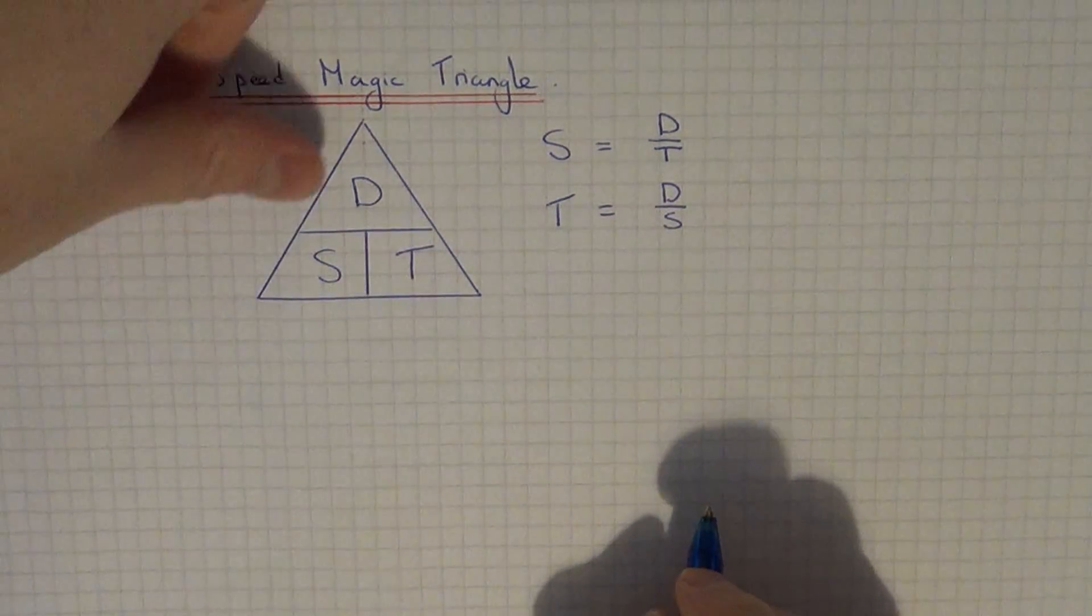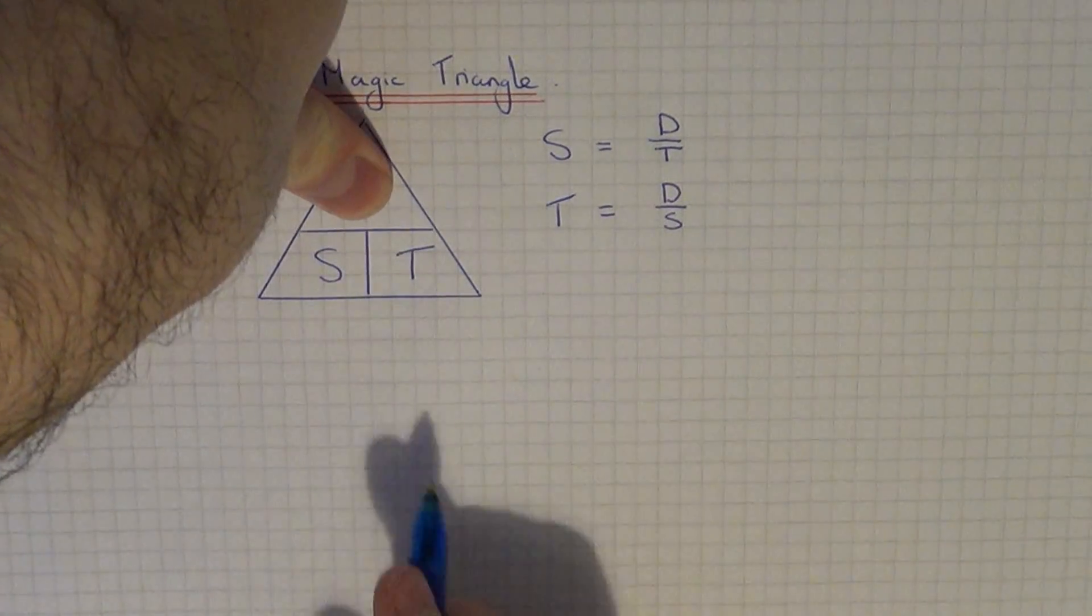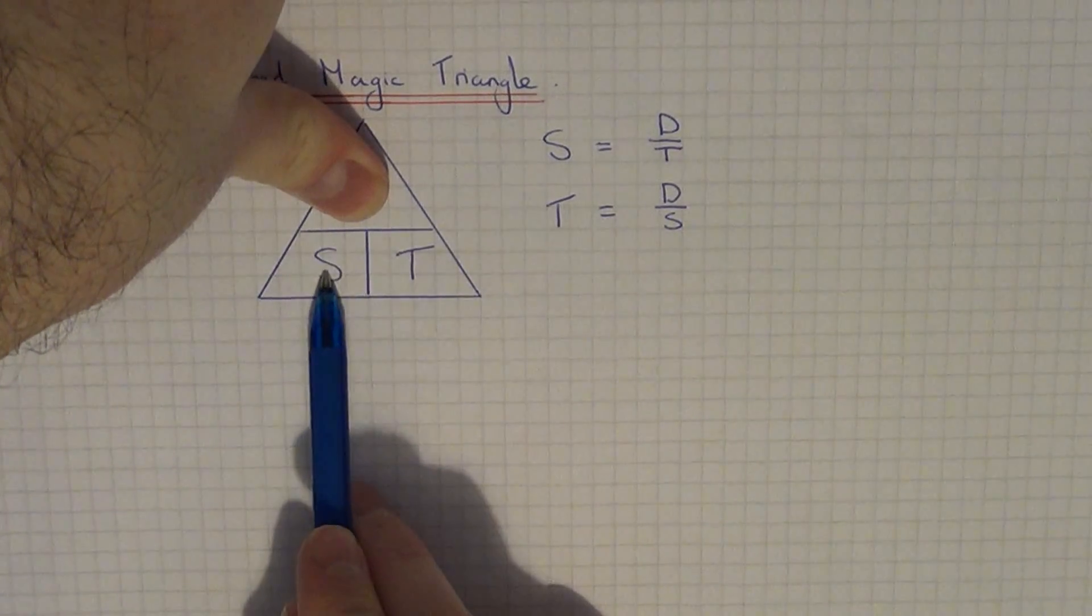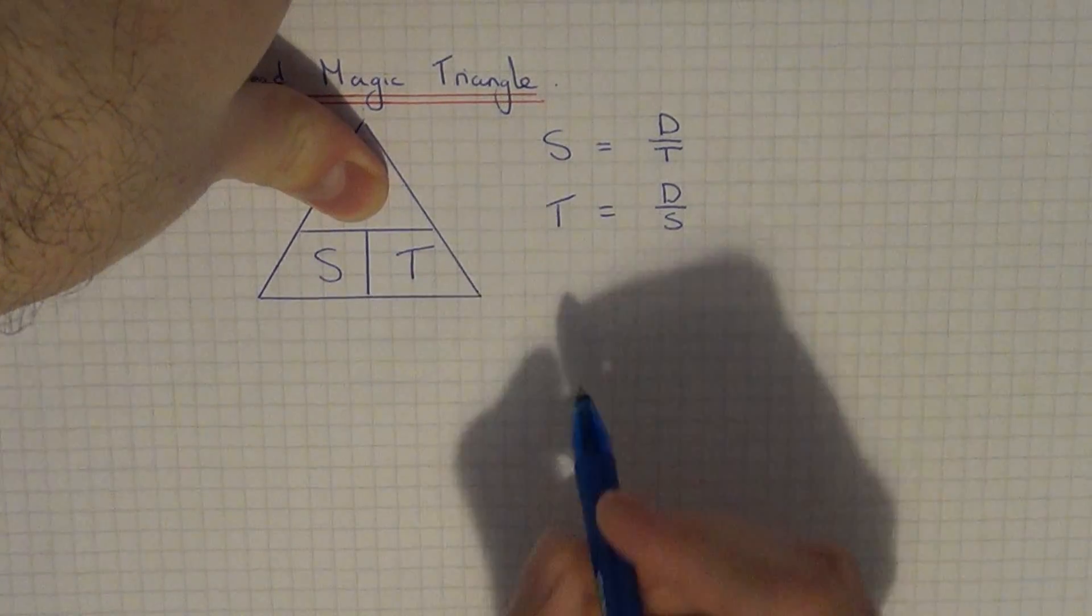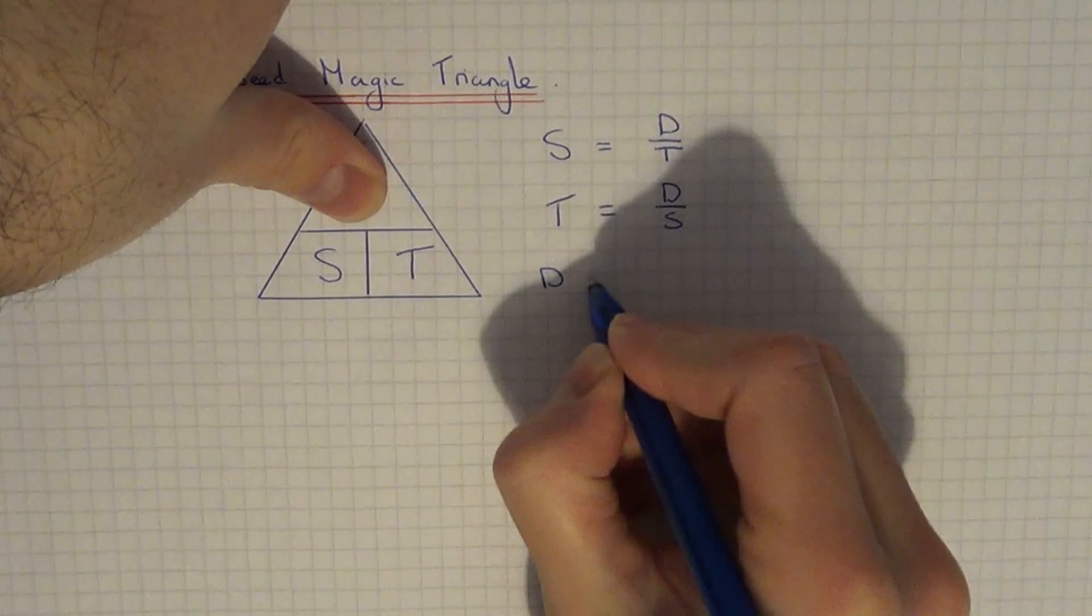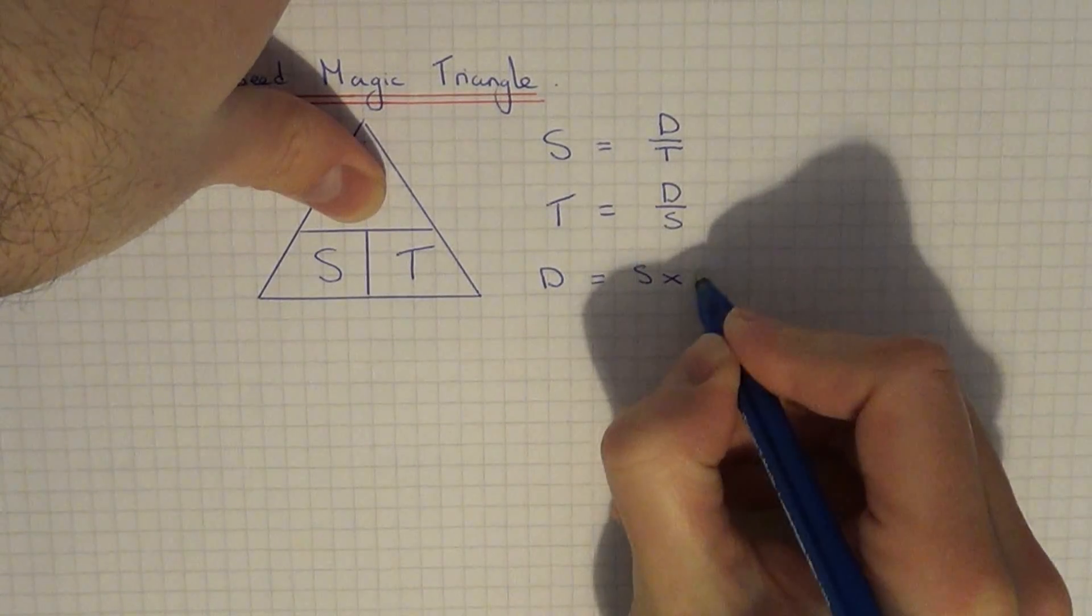And if you had to work out the distance, cover up the distance. This time the speed and the time are side by side, so it would be speed times time.